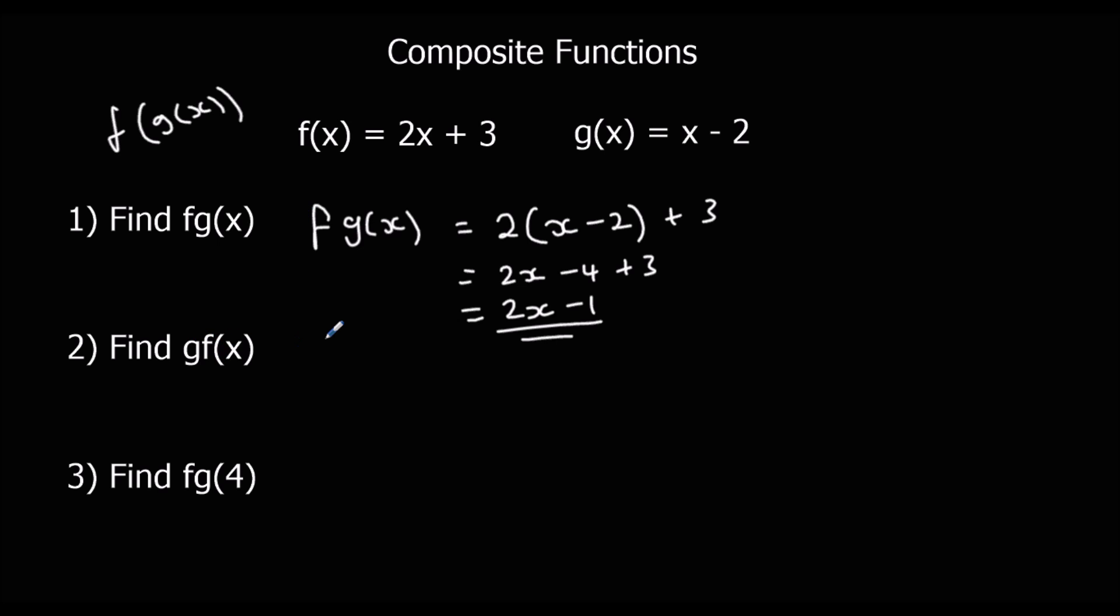For g f x, it's the other way around. We're going to put f into g. All of this is going to go where x is here. So g f x, this is going to be the input here. So 2x plus 3 goes in, take away 2.